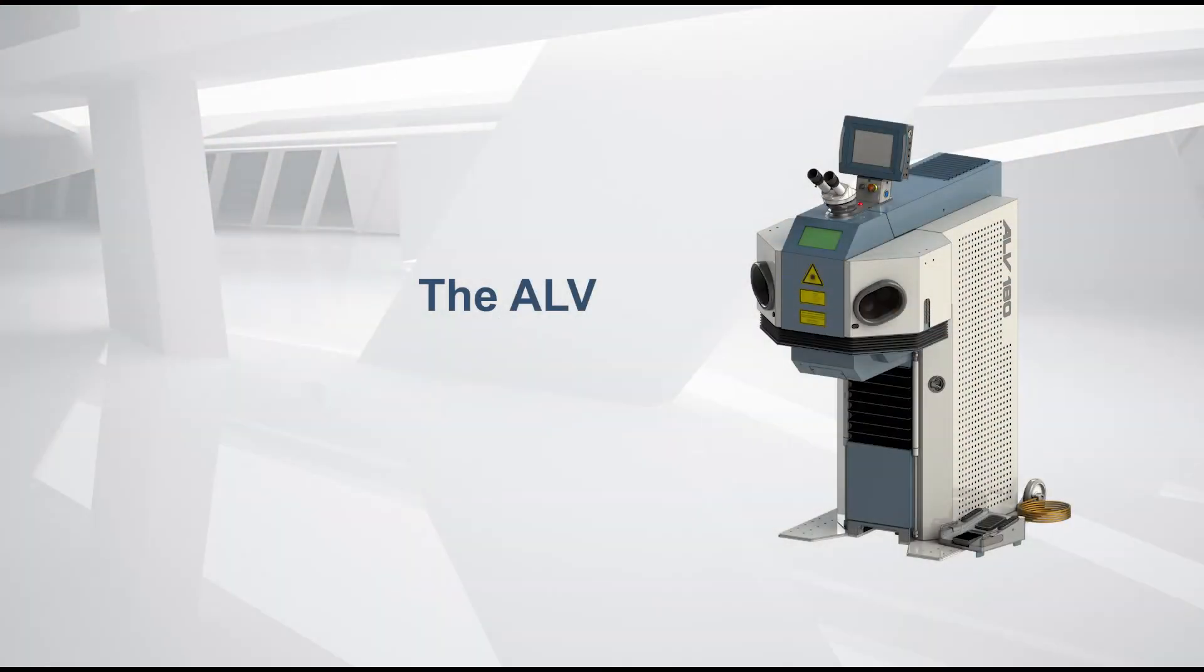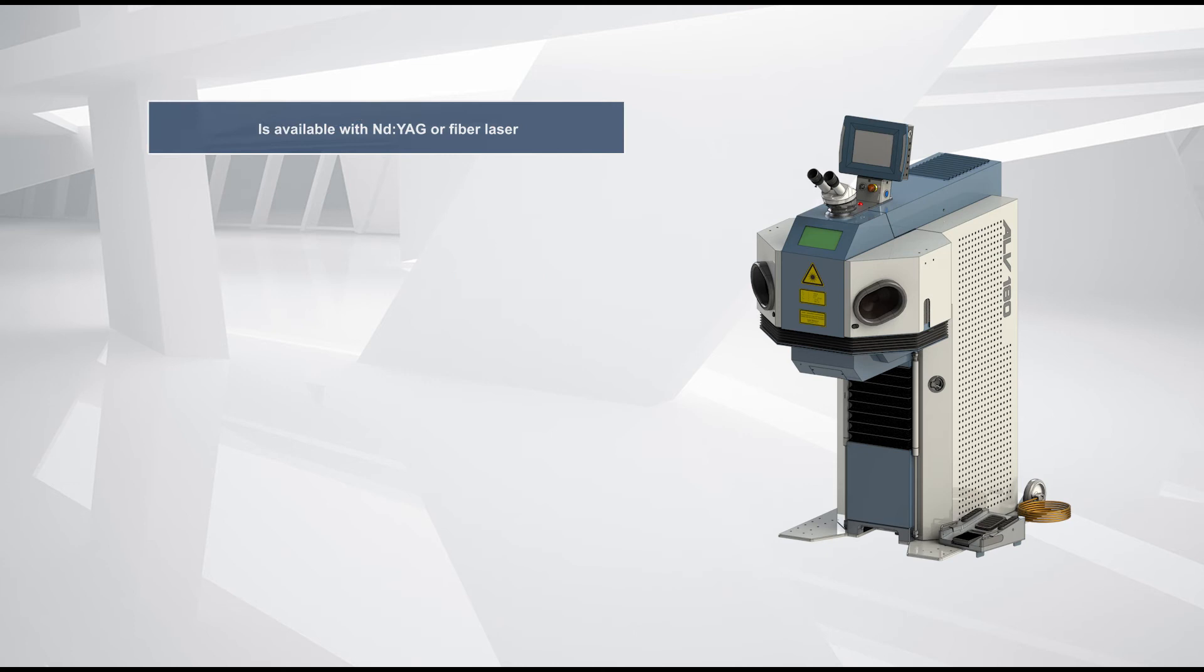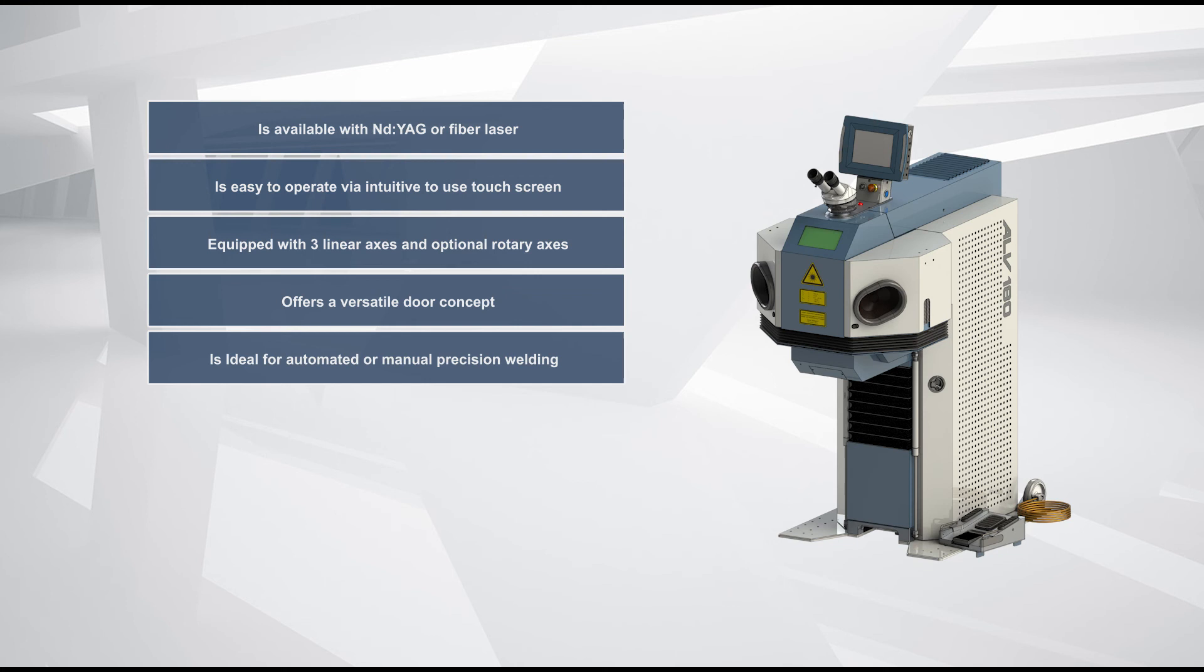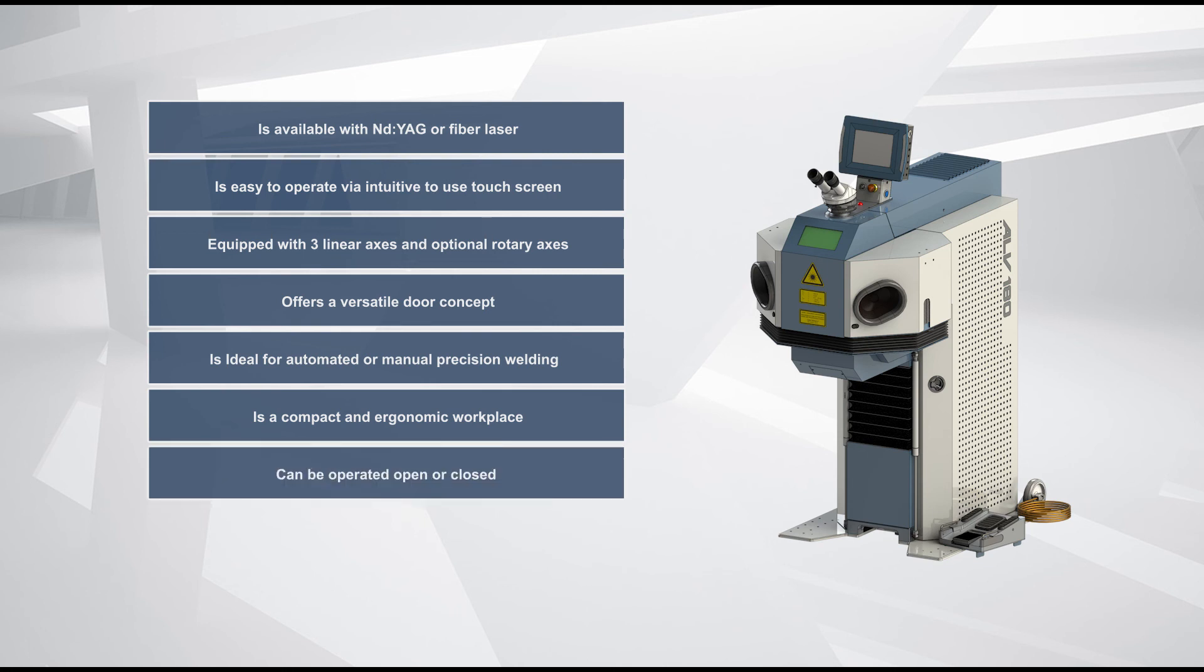The ALV is available with Nd:YAG or fiber laser. It is easy to operate via intuitive to use touch screen. Equipped with three linear axes and optional rotary axes. Offers a versatile door concept. The ALV is ideal for automated or manual precision welding. Is a compact and ergonomic workplace. Can be operated open or closed. And can handle work pieces up to 50kg.